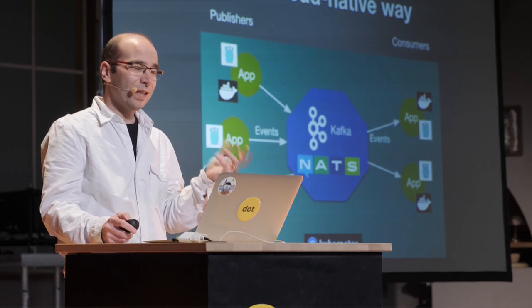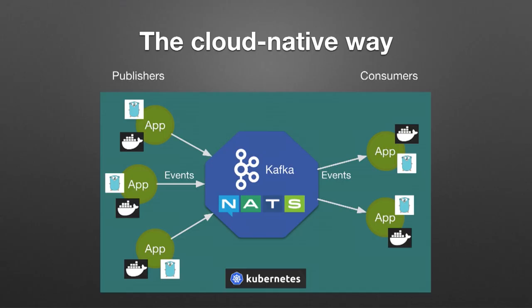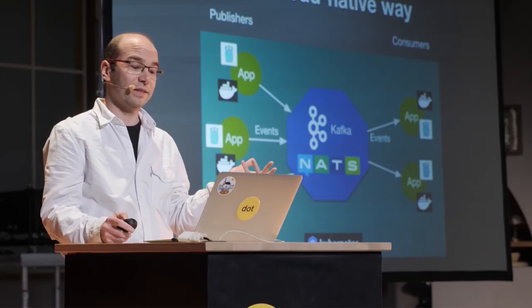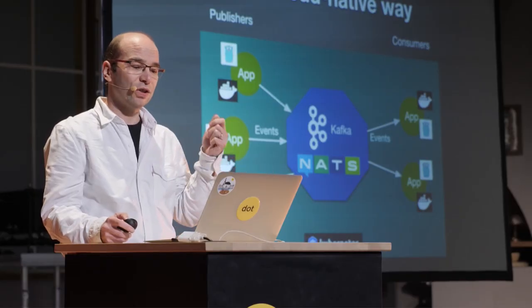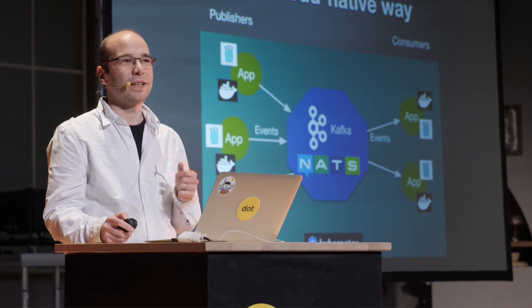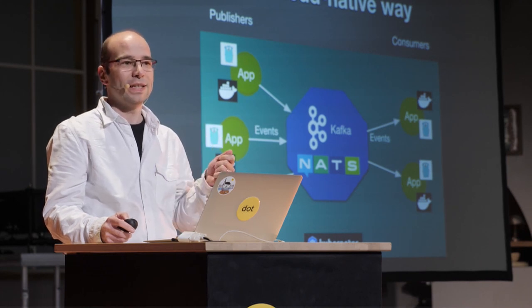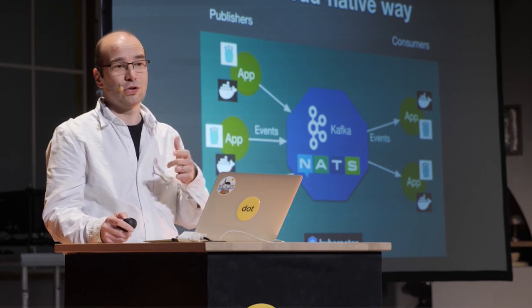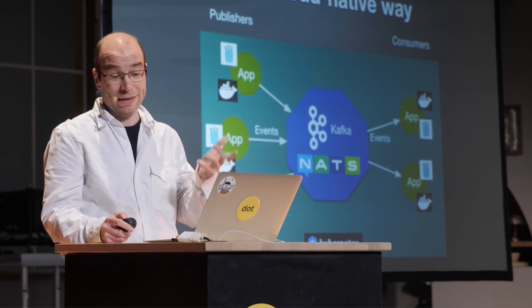When deployed with Kubernetes, this Go streaming application can scale horizontally by simply adjusting the replication factor for each service. You can then replace Spark, for example, with Kubernetes, and thus use a standard and familiar way to deploy and manage your application.